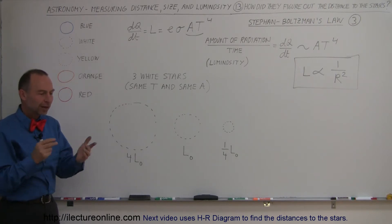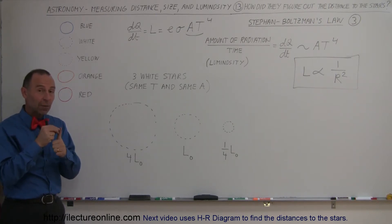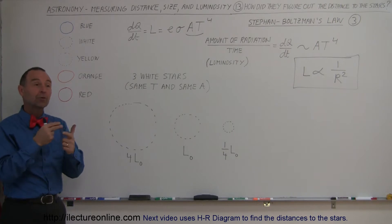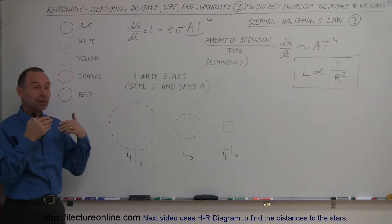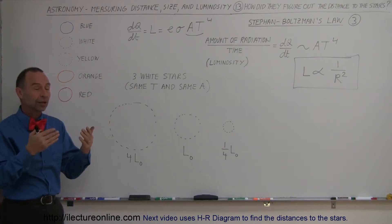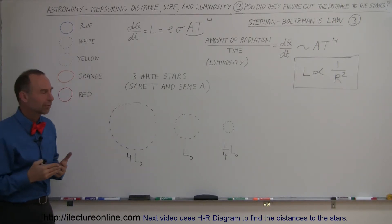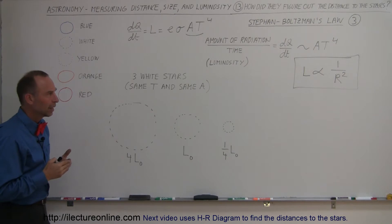We already discovered that with Wien's Law we can figure out the temperature of a star simply by looking at its color and the predominant wavelength we get from the star.